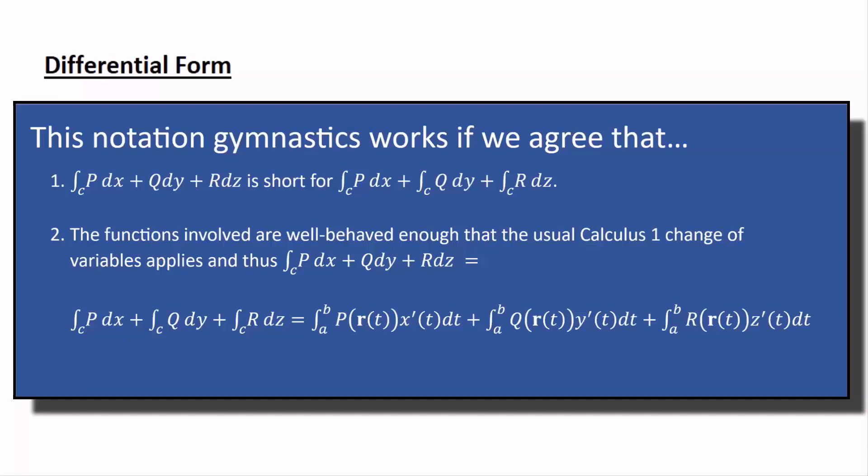And then add that to the integral from A to B, uppercase R from the vector field evaluated at r of T. That's just saying r in terms of T, uppercase R in terms of T, z prime of T dt. z prime of T dt is just dz.